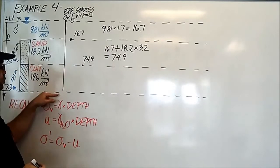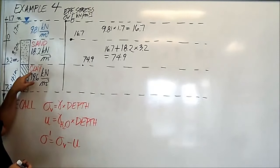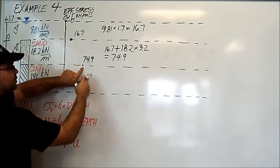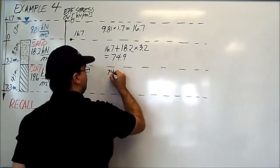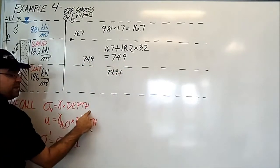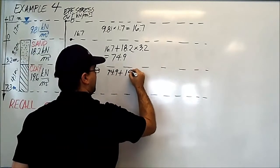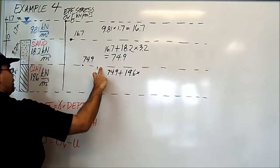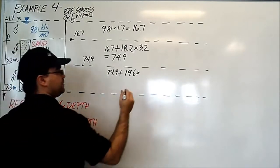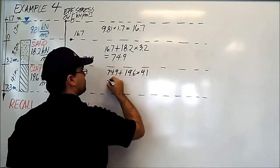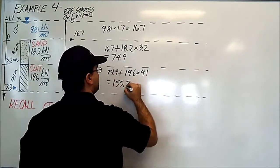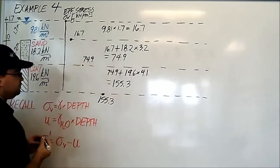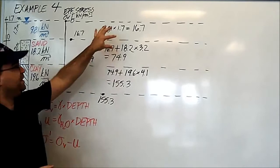Lastly, we're ready to move on to the vertical stress at the bottom of this borehole, that is, at the bottom of the clay. To calculate the vertical stress at the bottom of this clay, we start by adding the vertical stress above, which is 74.9, plus the density of clay, 19.6 kilonewtons per cubic meter, times the depth of clay, which is 4.1 meters. This result is 155.3.